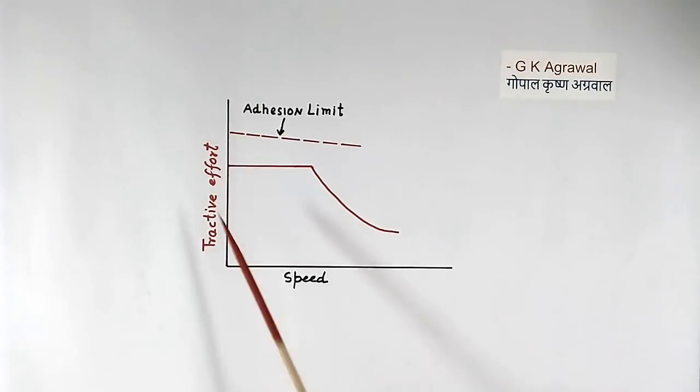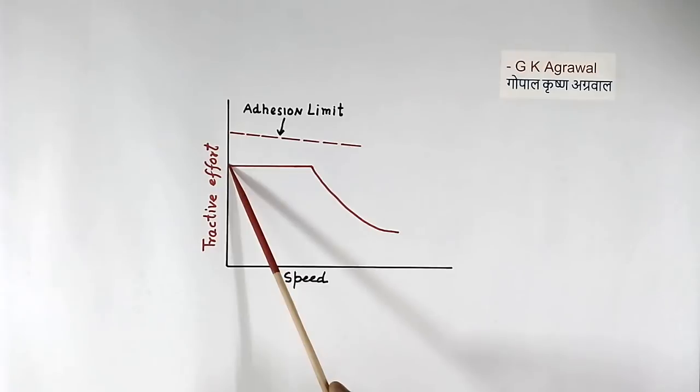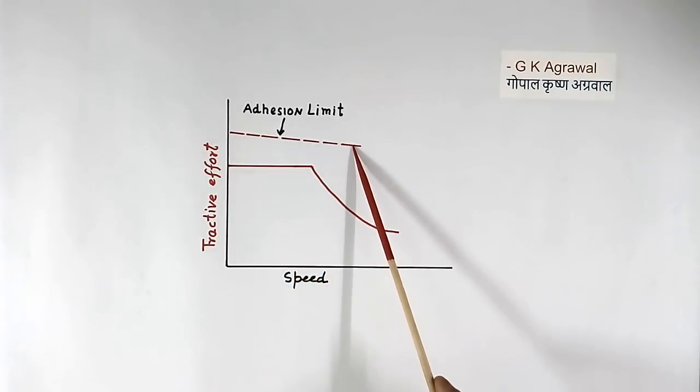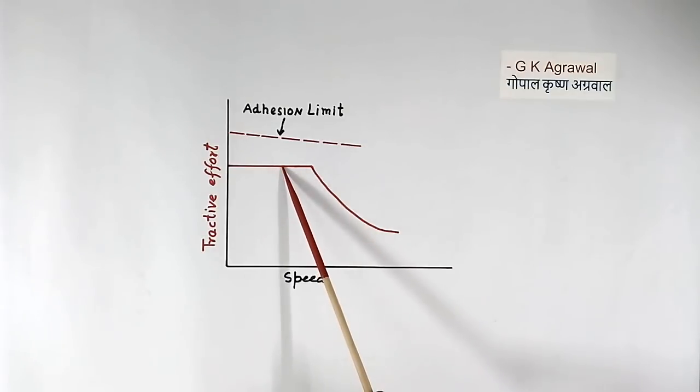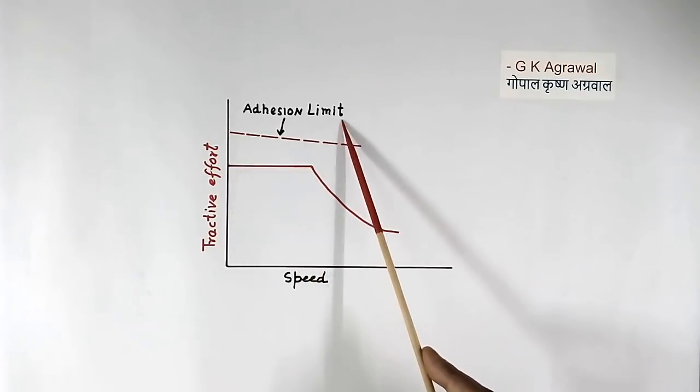This is tractive effort and this is speed. This is tractive effort with speed. And this is adhesion limit. This tractive effort should be as high as possible but should be less than this limit. Otherwise, wheel will start slipping. So in the case of AC motor along with IGBT-based control, we can keep the tractive force very high level but just below adhesion limit. So utilization of the tractive force is much more.